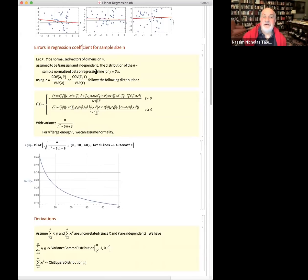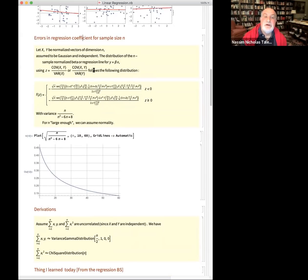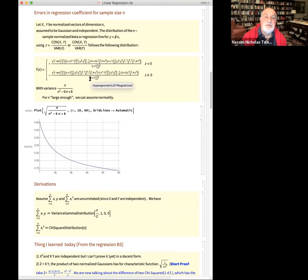What is the standard error on regression coefficient? We make it very simple. You say y equals beta x, and both normalized, and we ignore any additional components. Then of course we're going to have a variable that you observe, which is the sample covariance between x and y over the variance of x. I pulled out the distribution and the variance, which is rapidly normal.